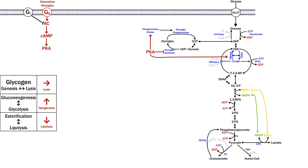In summary for the Gs pathway: glycogen is broken down, gluconeogenesis is favored (or if gluconeogenesis cannot happen, glycolysis is inhibited), and lipids are broken down from triglycerides.